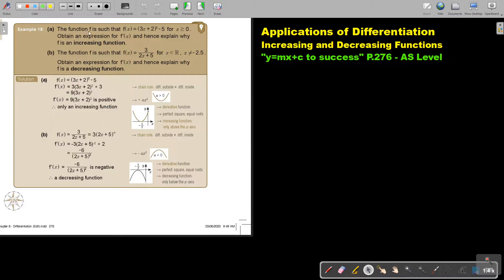The function f is such that f(x) equals in bracket 3x plus 2 to the power 3 minus 5/4x, x bigger and equal to 0. Obtain an expression for the differentiated f'(x) and hence explain why f is an increasing function.